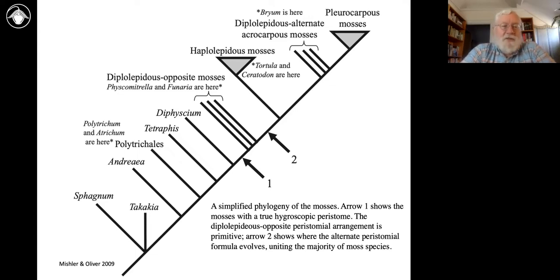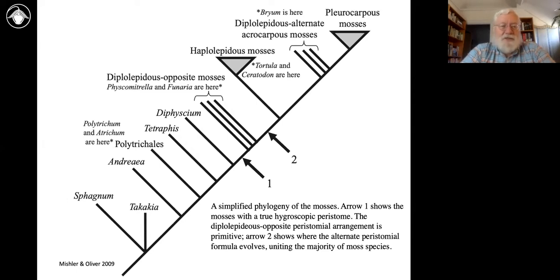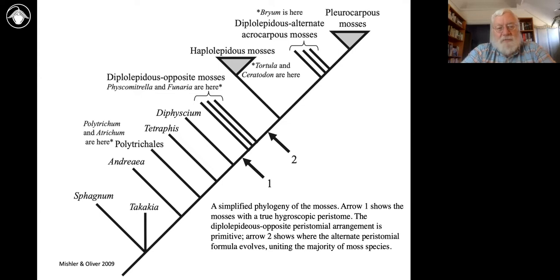Sphagnum acidifies its environment through ion exchange — the poikilhydric mechanism we were discussing. You put it around plants that like acid soil, like rhododendrons. Sphagnum probably takes no introduction, and in the northern latitudes particularly it is the ecosystem dominant engineer. It is more important than any tracheophyte in the boreal area of Canada, for example, where you have just miles and miles of Sphagnum bog.